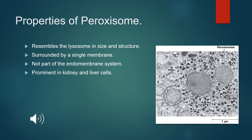The properties of the peroxisome. The size and structure of the peroxisome are very similar to that of the lysosome, and just like the lysosome, they are surrounded by one single membrane. On the other hand, the peroxisome, differently from the lysosome, is not part of the endomembrane system. These organelles are prominent in kidney and liver tissues, because of the functions that they carry.